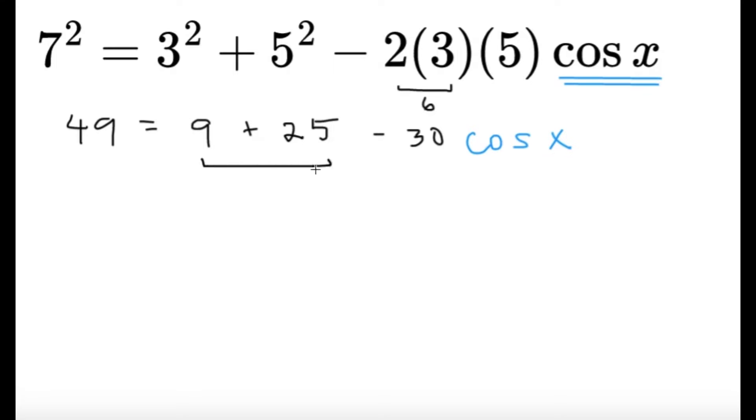49, well this is 34. So 49 minus 34, we're going to get 15 on the left side. Equals negative 30 cosine x. So we can divide both sides by negative 30. Cosine x equal to 15 divided by negative 30. So we're going to get cosine x equals negative 1 half.